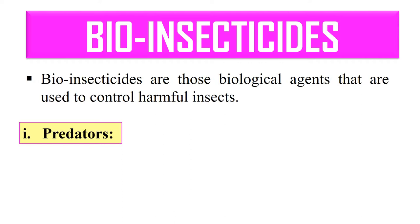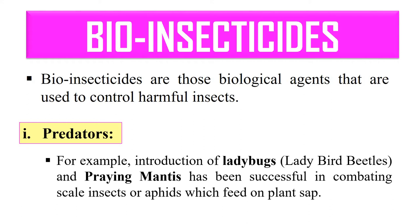Before using these predators, it should be kept in mind that they should be very specific — they should only affect the insect you want to eliminate and should not harm useful insects. Examples include ladybugs, the ladybird beetle, and praying mantis, which have been successfully used for combating scale insects or aphids that feed on plant sap.